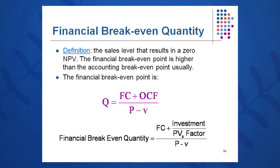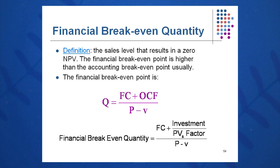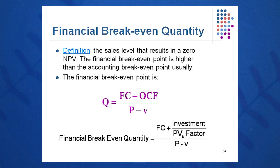Finally, we look at a third breakeven quantity: financial breakeven quantity. Still using the generic form — fixed cost plus OCF over P minus V — financial breakeven quantity is the sales level or quantity that results in a zero NPV. To calculate OCF in this case, it is investment over the PVA factor (present value annuity factor). So the formula for financial breakeven quantity is fixed cost plus (investment over PVA factor), divided by contribution margin.